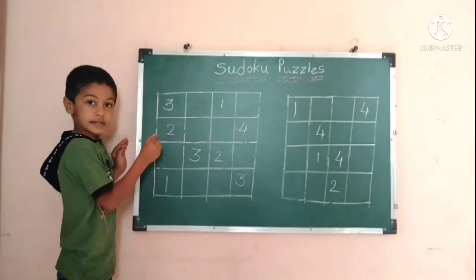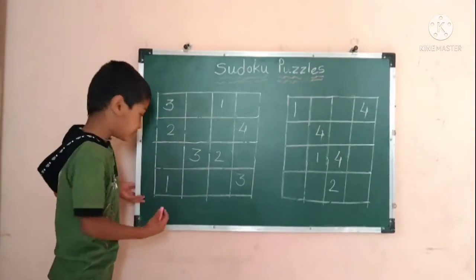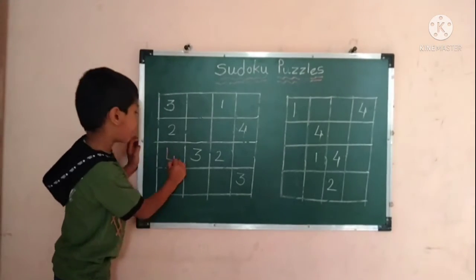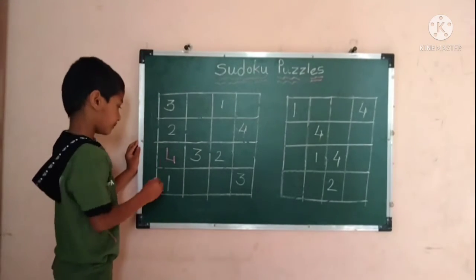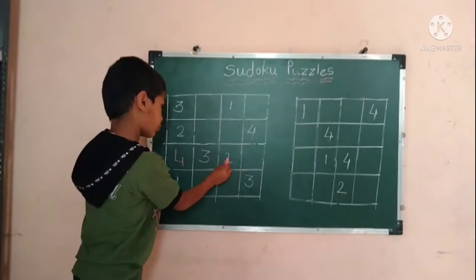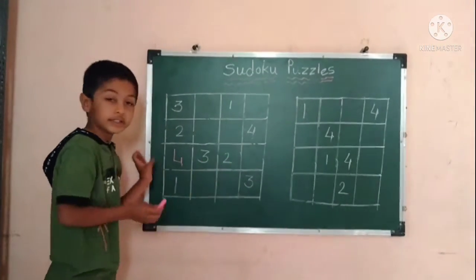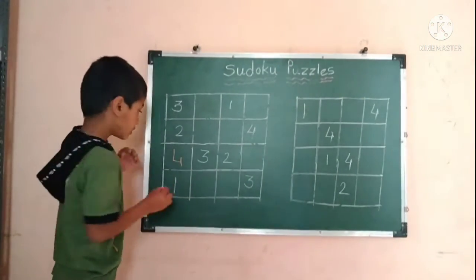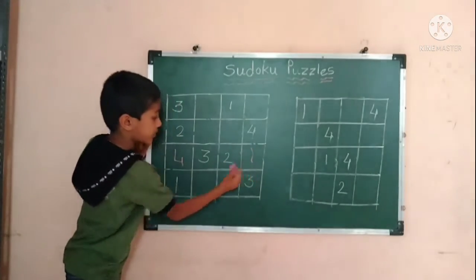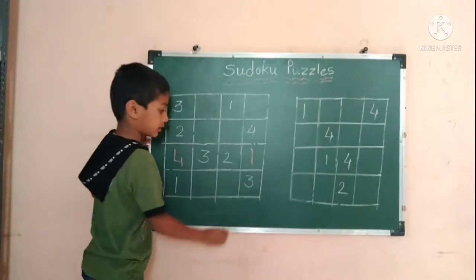One, two, three — which number is missing? Four. Four. Two, three, four — which number is missing? One. One.